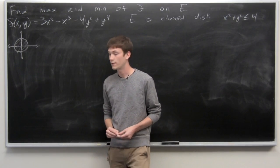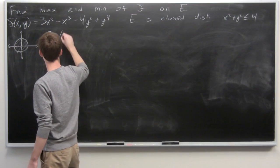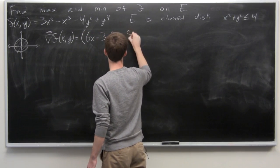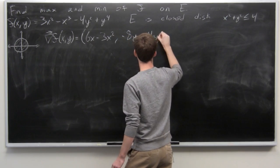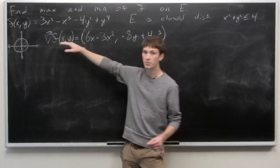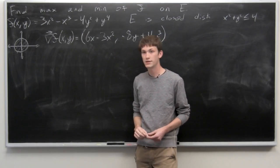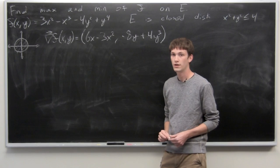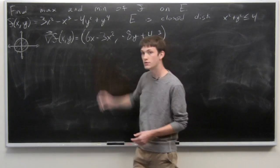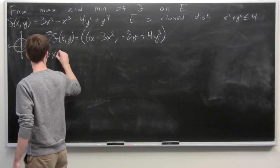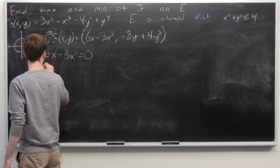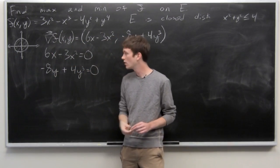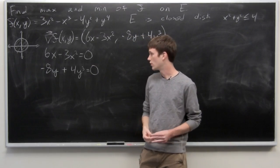First, we'll take the gradient vector of our function. Taking the partial derivative with respect to x, we get 6x − 3x². The partial derivative with respect to y is −8y + 4y³. We want to set this equal to zero, so we set each component equal to zero: 6x − 3x² = 0 and −8y + 4y³ = 0.